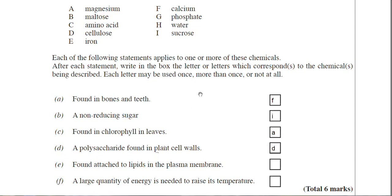Two more. Found attached to lipids in the plasma membrane. So you need to have an understanding of your membrane structure here and some knowledge of lipids and phospholipids because what is found in the plasma membrane is phospholipids. So you'd actually have a phosphate group attached to the lipid then making it a phospholipid. So our answer there is G.